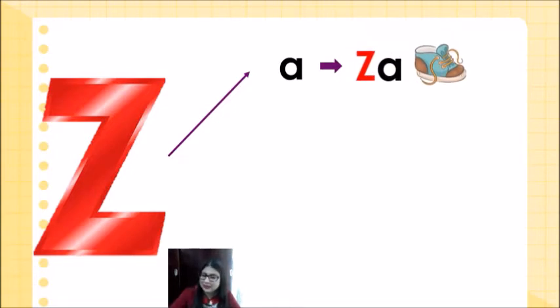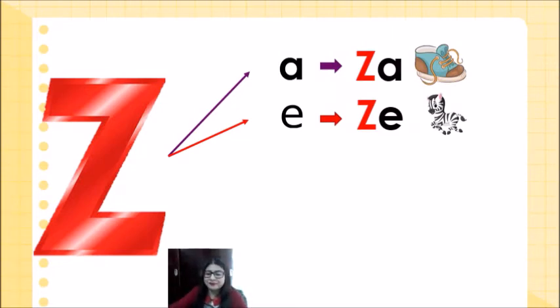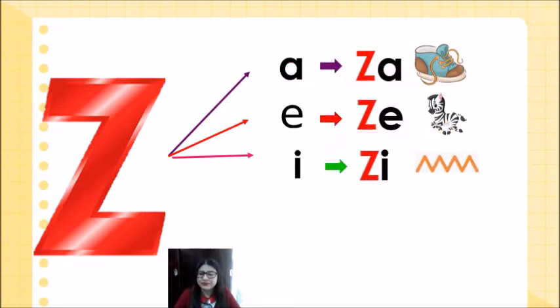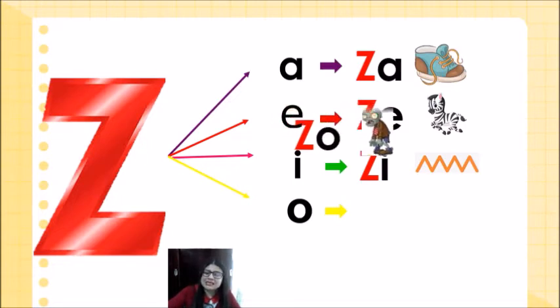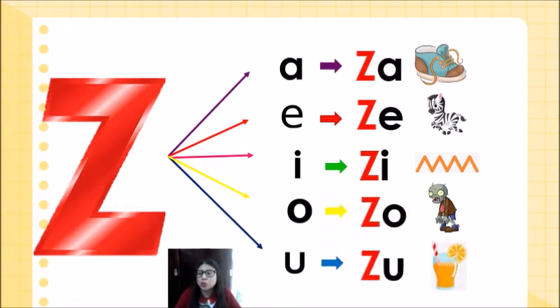Ahora, corazón, es muy importante también que tú identifiques cuáles son las sílabas de la letra Z. Si nosotros juntamos a la letra Z con la vocal A, forma una sílaba, que es la sílaba Za. Za de zapato. La letra Z con la vocal E, forma la sílaba Ze, Ze de cebra. La letra Z con la vocal I, forma la sílaba Zi, Zi de zigzag. Y por último, la letra Z con la vocal U, forma la sílaba Zu, Zu de zumo.